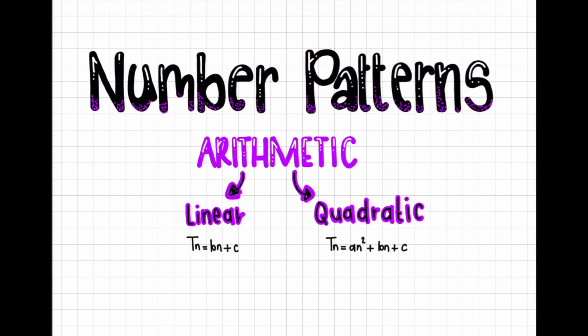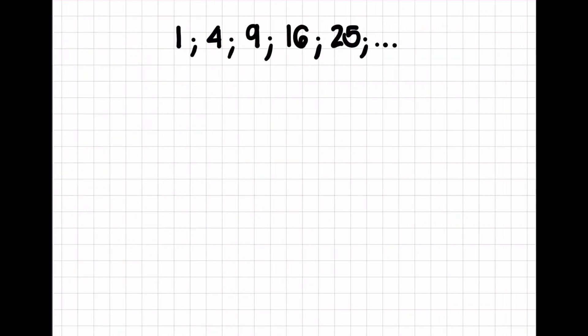In today's video I'm going to be determining the nth term of a quadratic number pattern. Looking at our first example, we've got 1, 4, 9, 16, 25. If we look at this number sequence straight away, we can tell that the formula or the nth term is tn equals n squared — we can tell that straight away.